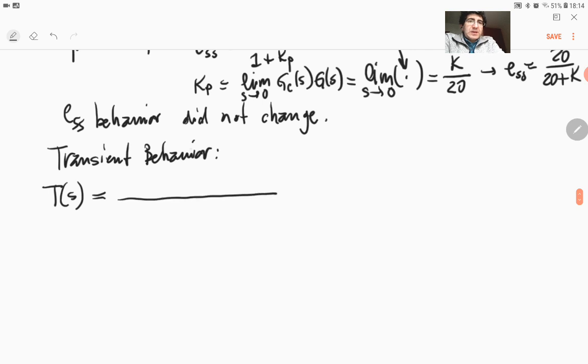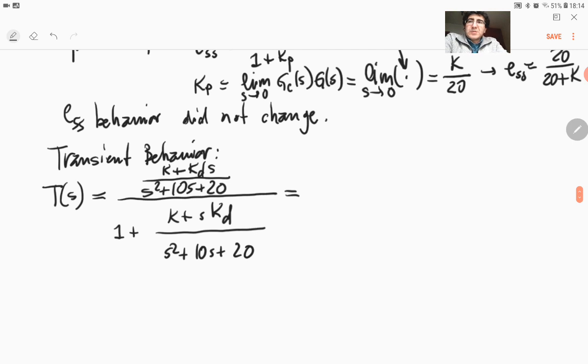So that's going to be again K plus KDS over S squared plus 10S plus 20. And we have 1 plus K plus SKD or KDS over S squared plus 10S plus 20. This will simplify to K plus KDS over S squared. And in the denominator, we will have S squared plus 10S plus KDS, plus K plus 20. So S squared plus 10S plus 20 plus KDS will combine with 10, and K will be combined with 20. So that's going to be our transfer function.